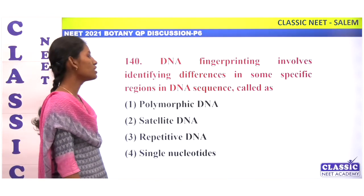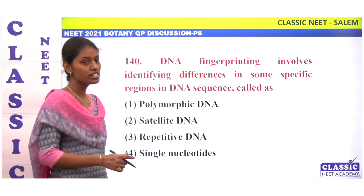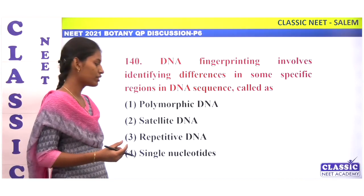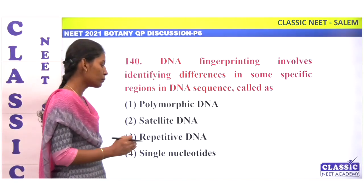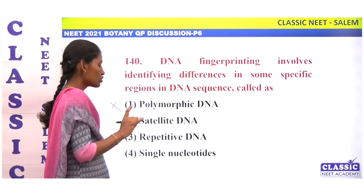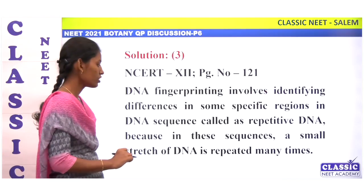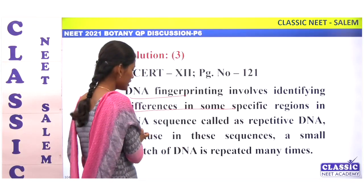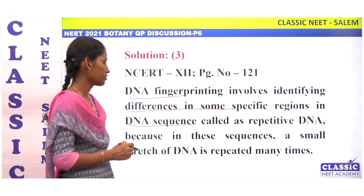DNA fingerprinting involves identifying differences in specific regions in a DNA sequence. These specific regions are called repetitive DNA — moderately repeating and highly repeating sequences. Satellite DNA is highly repetitive. The correct answer is repetitive DNA. Option 3.